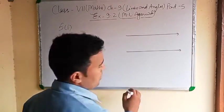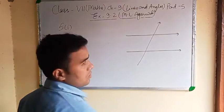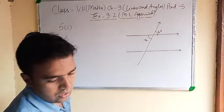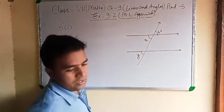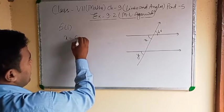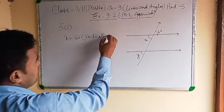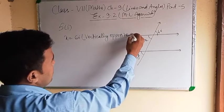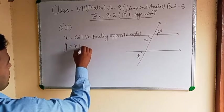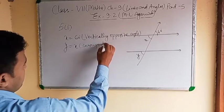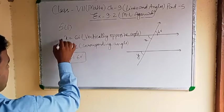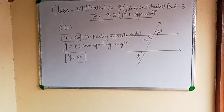In question 5, part 1: two parallel lines are given with a transversal. The angles are 60 degrees, x, and y. x equals 60 degrees by vertically opposite angle. Then y equals x by corresponding angle, so y equals 60 degrees.